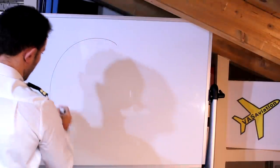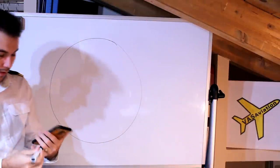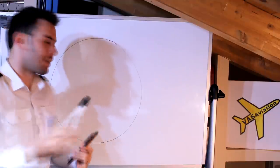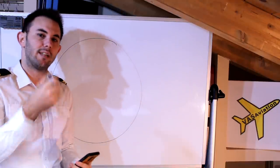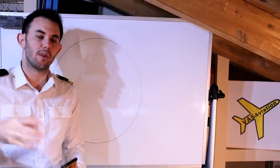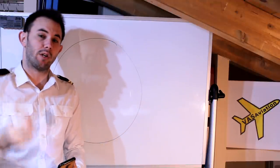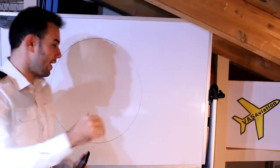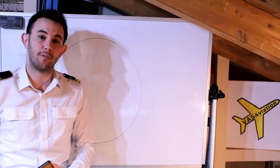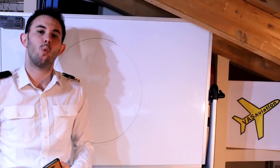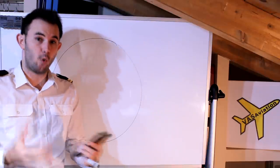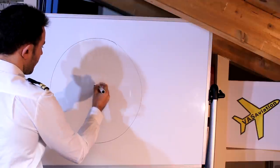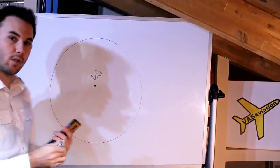As always with our polar stereographic exercises, we start by drawing a circle. At some point, as we gain experience, we may skip drawing the entire circle and only draw the resulting triangle, but for now let's draw the entire whole circle. This circle represents the Earth as seen from over and above one of the poles. Remember that the polar stereographic chart projection is a projection on top of one of the poles.